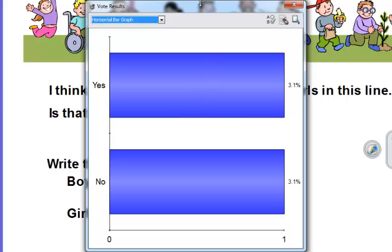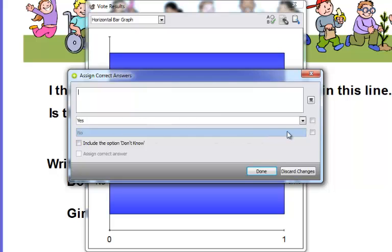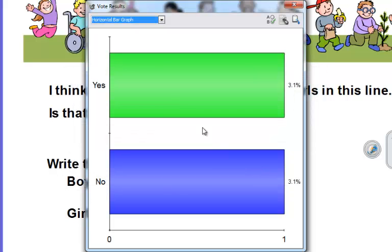So I have yes and no. Now let's just say that the correct answer was yes. I can click on this assign correct answers and if I say the answer was yes, now yes is going to be green and that's going to be indicated that it was a correct answer.